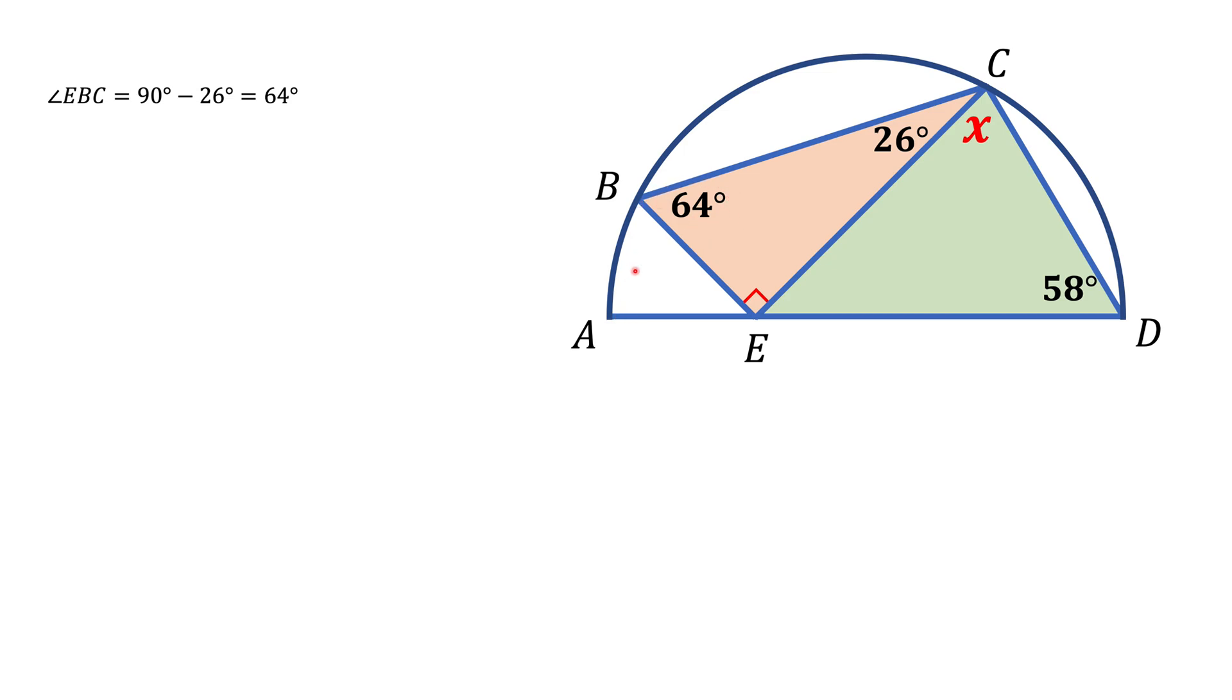Next, let's connect points A and B. This gives us an inscribed quadrilateral ABCD. A quadrilateral is inscribed if and only if the sum of opposite angles is 180 degrees. So angle B plus angle D equals 180 degrees. One is 58 degrees, so the other is 122 degrees. Part of this 122 degrees is the 64-degree angle, so the remaining part is 58 degrees.